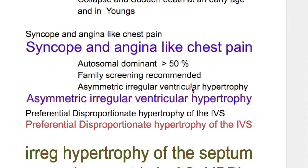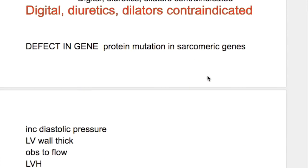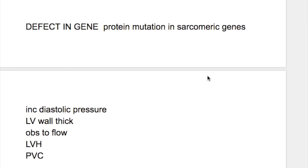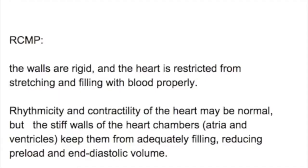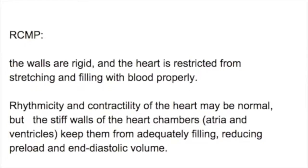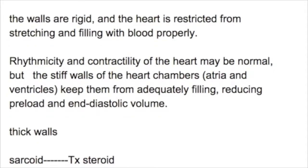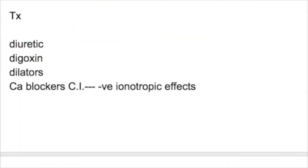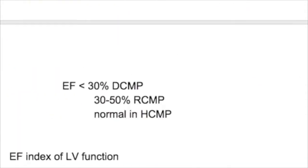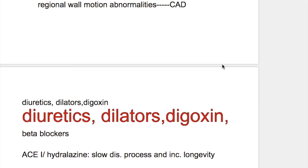Hypertrophic cardiomyopathy is autosomal dominant in more than 50% of cases, so family screening is recommended. There is a defect in gene protein mutation in sarcomeric genes. Conditions causing restrictive cardiomyopathy include sarcoidosis (treated with steroids), amyloid, hemochromatosis, endocardial fibroelastosis, and Noonan's syndrome.